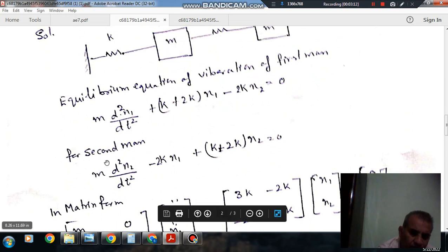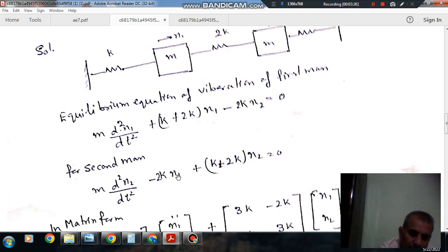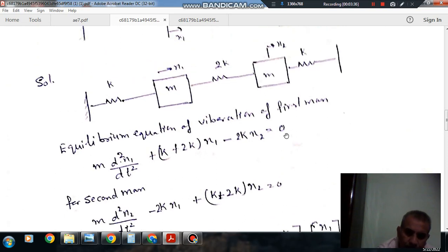Similarly, for the second mass, the equation of vibration is m d²x₂/dt². The force from the middle spring will be 2k(x₁ - x₂), so it's -2kx₁ plus the total stiffness on this mass is (2k + k)x₂ = 3kx₂. So these are the equations of vibration.